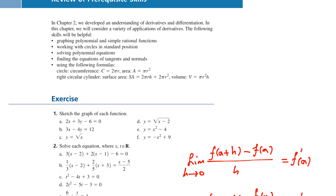For example, the volume of a sphere is 4/3 π r³, where r is the radius. The volume of a cylinder is V equals π r² h, where r is the radius of the base and h is the height.